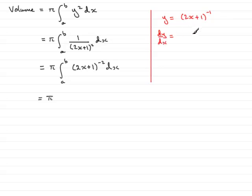Then using the chain rule, dy/dx would equal minus 1 multiplied by (2x plus 1) drop the power by 1 so that's now down to minus 2, and then multiply by the differential of what you see in the bracket. And the differential of 2x plus 1 is just going to be 2.